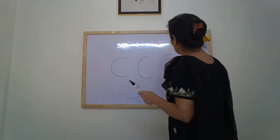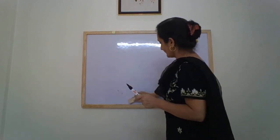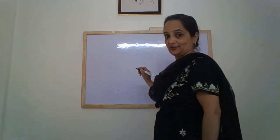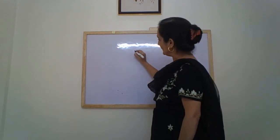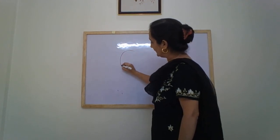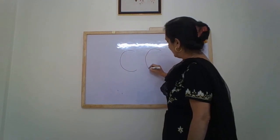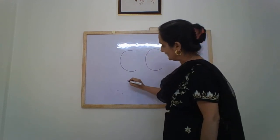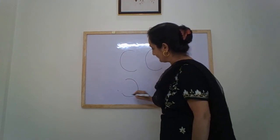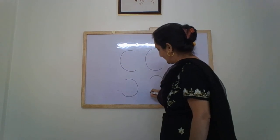So let me show it to you once again. And then you can practice these curves. Right children? So a backward curve. This is backward curve. And this is forward curve. This is forward curve.